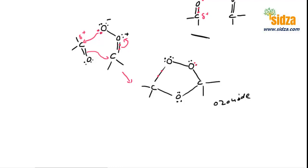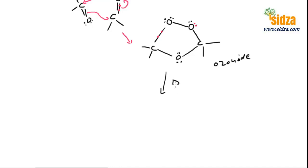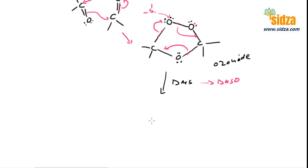In the reduction process, when you react with DMS — dimethyl sulfide — the sulfur atom with its electron pairs forms a bond with one oxygen atom. The electrons between the two oxygen atoms shift to one side, and the electron pair shifts to the other side. The bond goes with the oxygen atom, so DMS is actually converted into DMSO. You get the carbonyl group here with two substitutions and a double-bonded oxygen, and on the other carbon — also with two substitutions — it's now bonded with oxygen through a double bond.